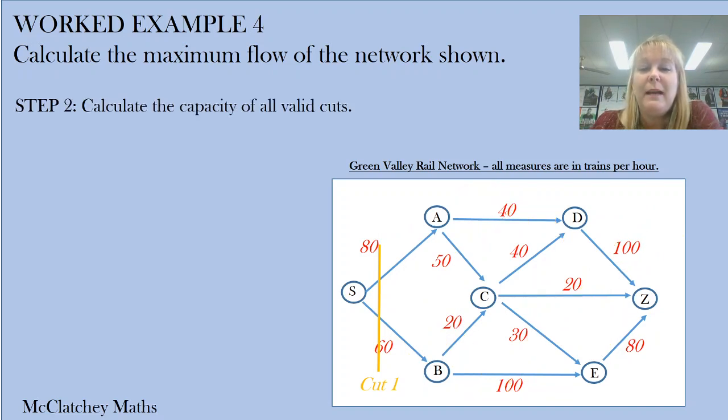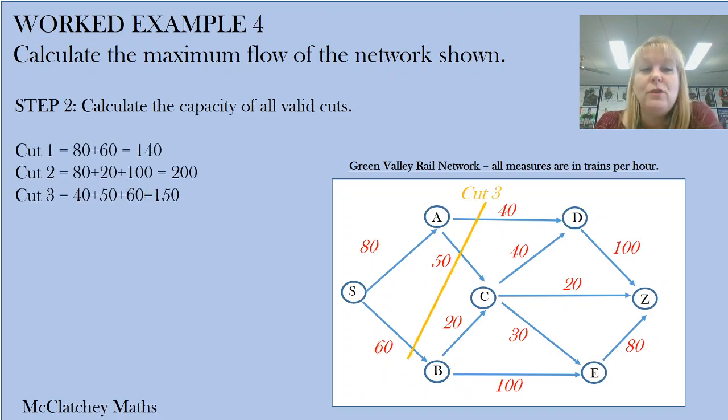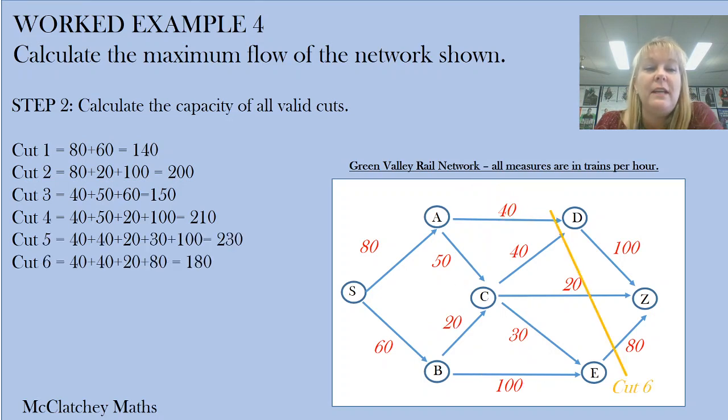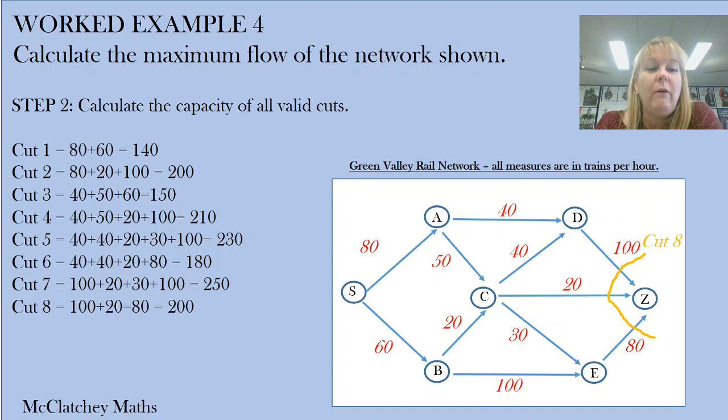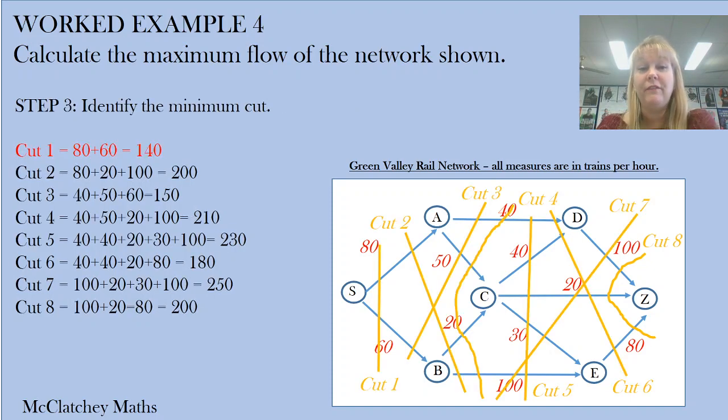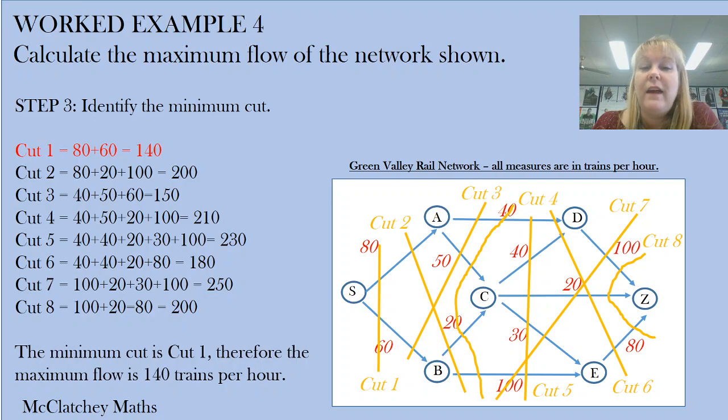Now we calculate the capacity of all those cuts. This is fairly easy because all flows go from left to right, from source to sink, so we don't have to exclude any. We've now identified eight different cuts and their values. I've gone through this fairly quickly to save time, but you may want to pause and look at each cut and how I've added those edges together. Now we identify the minimum cut. Thankfully, it was the first one we found, but it's not always going to be that way. In our previous example, it was partway down the list. Don't always assume your first cut is the minimum cut. The answer is 140 trains per hour.